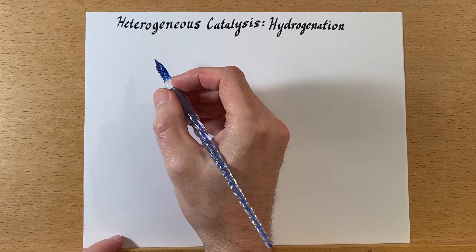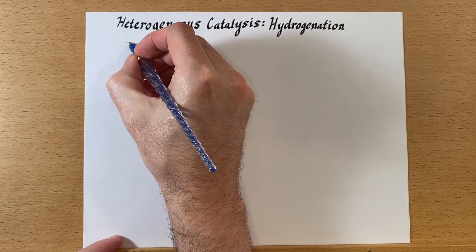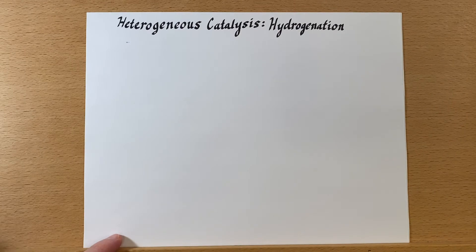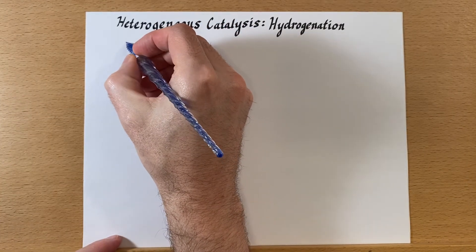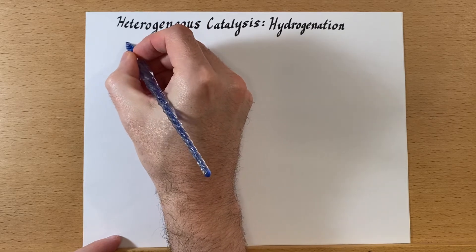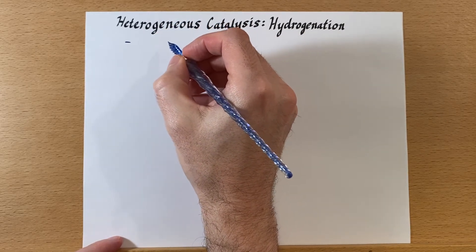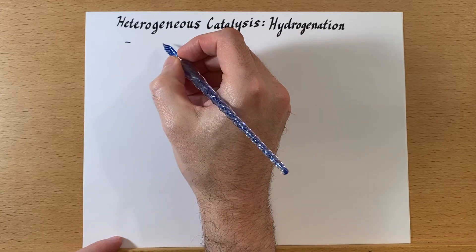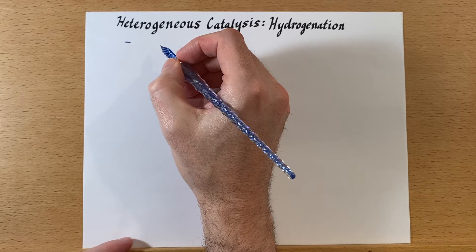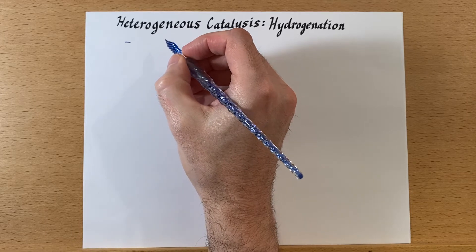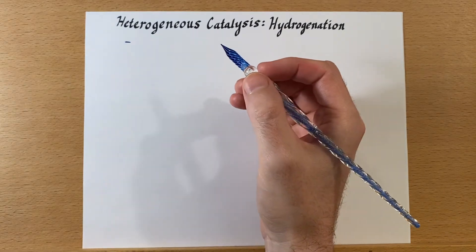The first thing we're going to have is that the hydrogen is going to bond to the palladium via its sigma bond, and this is called agostic bonding or it will form a sigma complex.